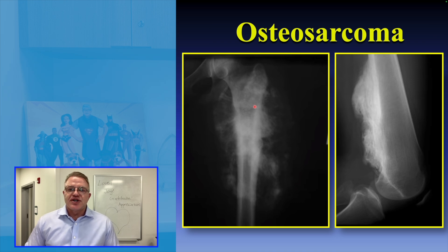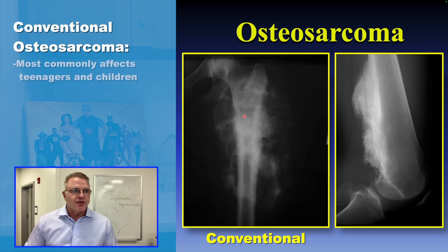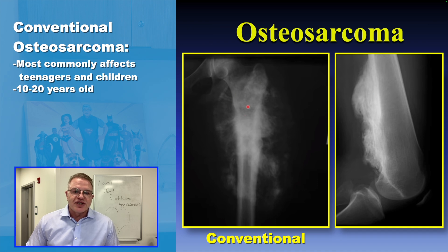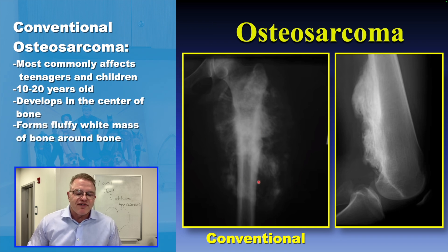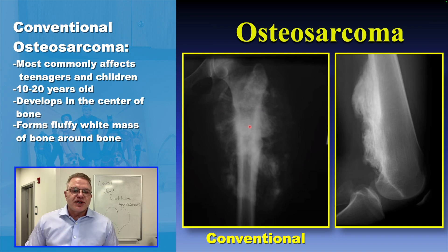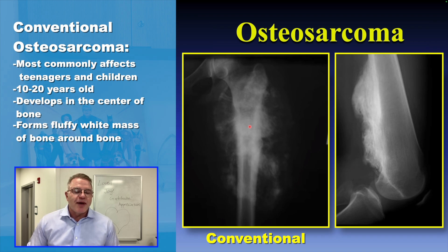These are two examples of an osteosarcoma. The image on the left is a conventional osteosarcoma, which is the most common type of osteosarcoma, affecting teenagers and children primarily between the ages of 10 to 20. We can see that the tumor developed from the center of the bone and formed a very large mass around the bone, producing a white, fluffy, cloud-like substance within it, which is bone. An osteosarcoma is called an osteosarcoma because it is a sarcoma that produces bone — not because it arises from bone, but because it produces bone.